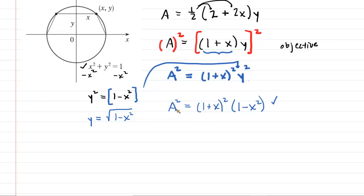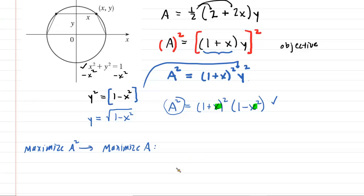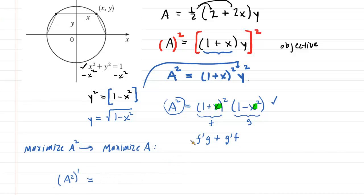Even though we want to maximize the area of the trapezoid, our calculations will actually maximize area squared, which in turn maximizes the area. Our objective is now in terms of a single variable x. The next step is to compute its derivative. We'll use the product rule, which I like to express with the mnemonic 'fig plus gif,' defining the first function as f and the second as g.